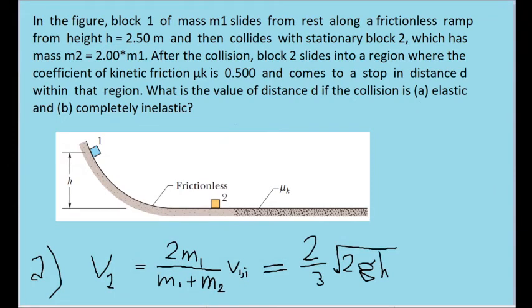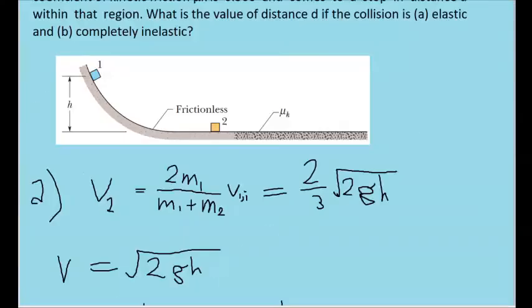Now for part B, we are dealing with an inelastic collision, specifically a completely inelastic collision, which essentially means that blocks one and two are going to stick together. We started part A with a formula that tells us the final velocity of one of the blocks after the collision, and this formula applies to elastic collisions.